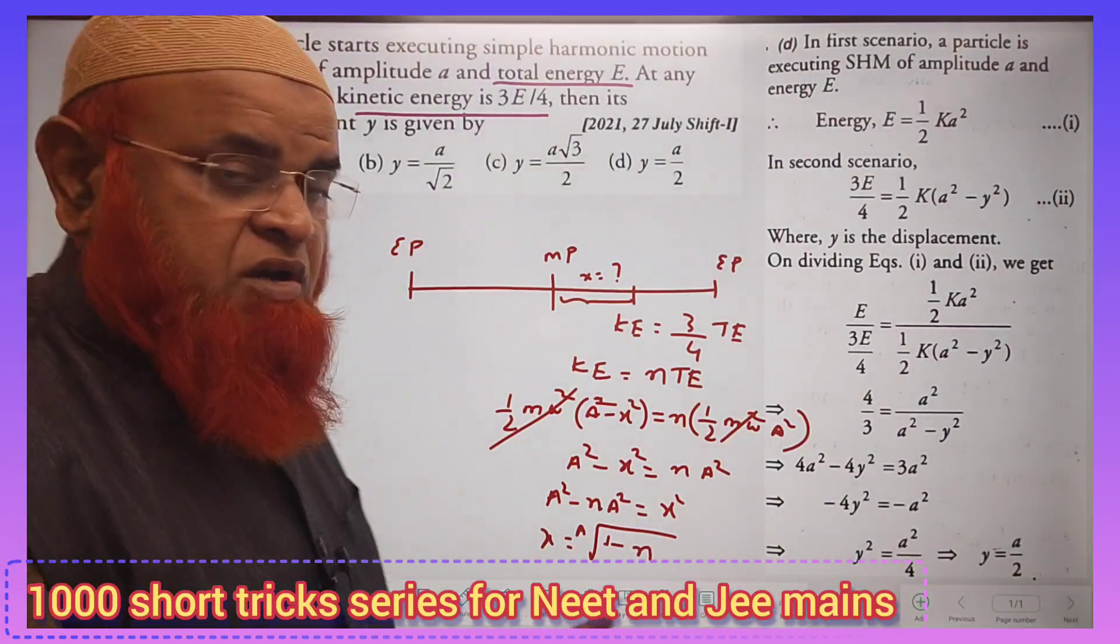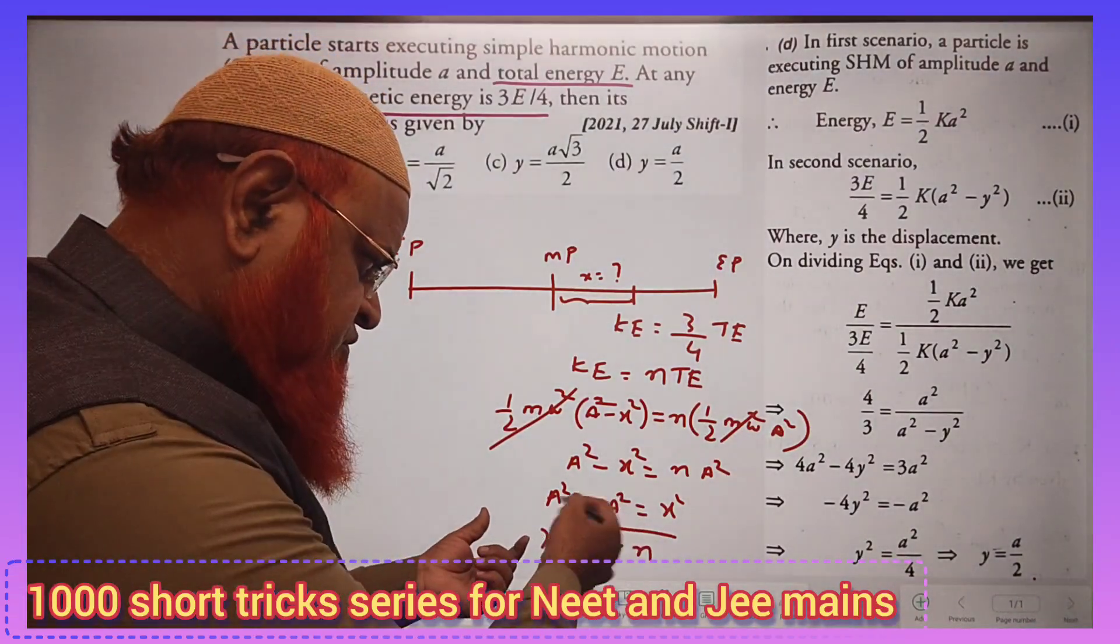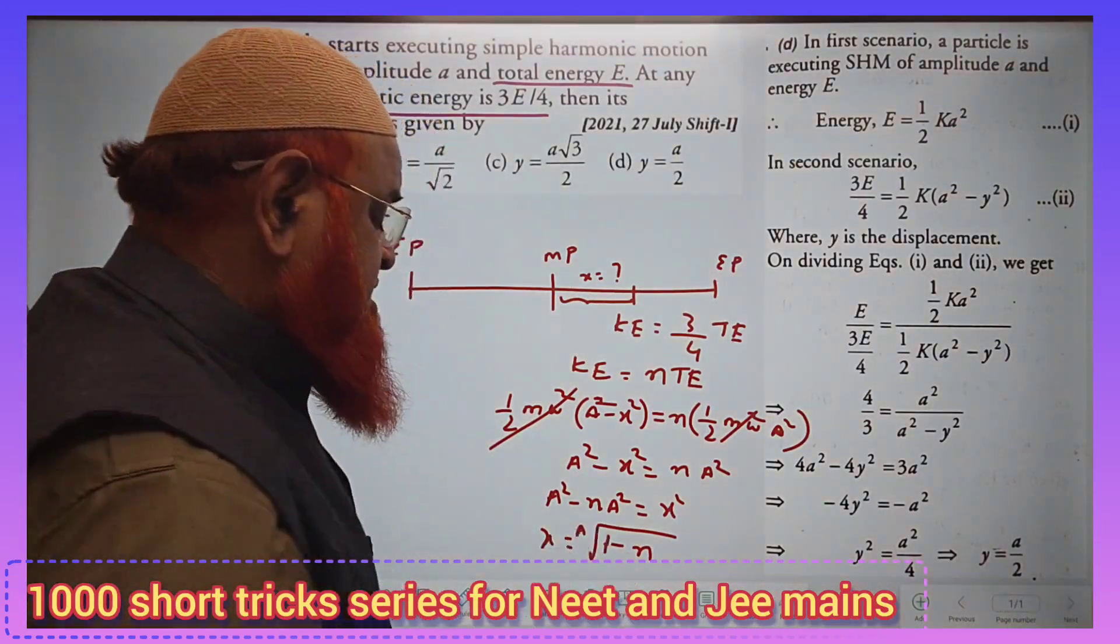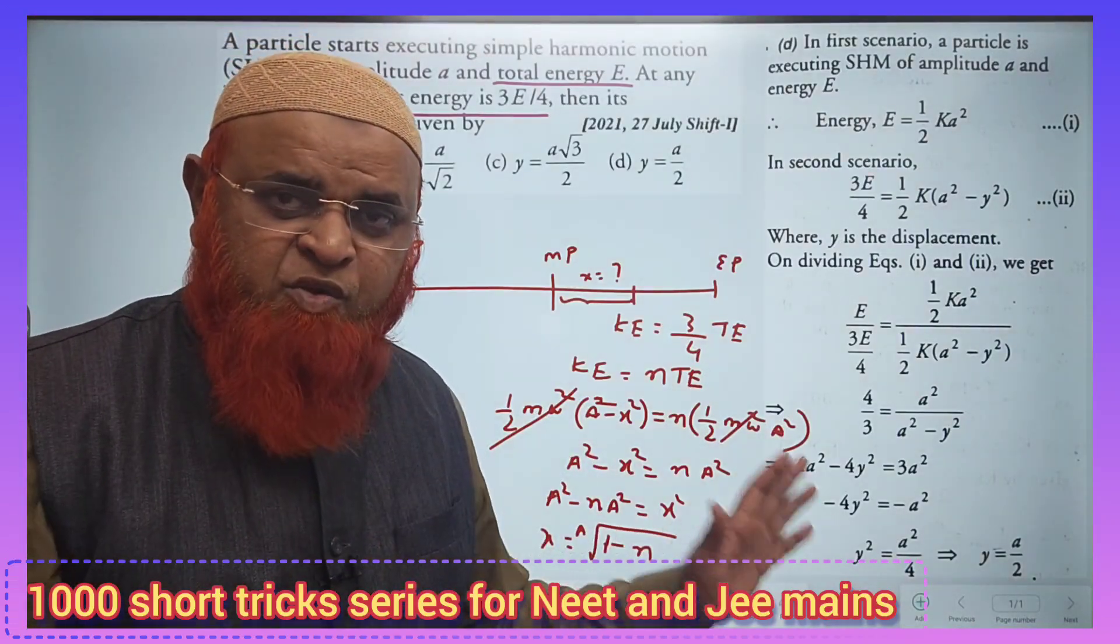That's it. This is your short trick. So what I have done, a square out of square I have taken common out a and square root of 1 minus n. That's it. This will be your short trick and you can solve any problem by using this short trick.